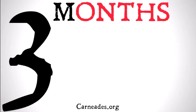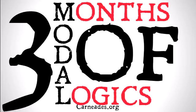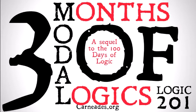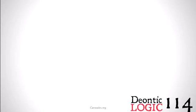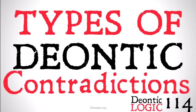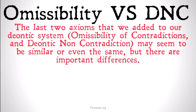Welcome back to the three months of modal logics with Carneades.org. We're continuing our sequel to the 100 Days of Logic with types of deontic contradictions. Our main goal is going to be to split up and explain the difference between the omissibility of contradictions axiom and the deontic non-contradiction axiom.